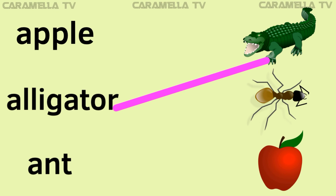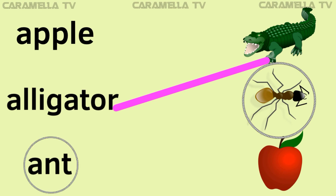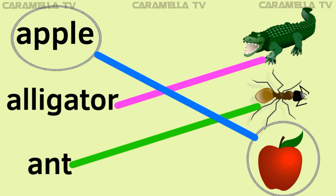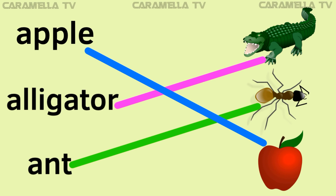The second picture we have is 'and.' Can you guys guess where is the word 'and'? That's right, let's connect them. And the last picture we have is a picture of an apple. Can you guys guess where the word apple is? That's right, let's connect them.